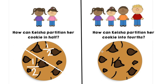Now Keisha received another cookie and she didn't only want to share it with one friend, but she wanted to share it with her three other friends. With all of them sharing the cookie, that makes four people. And Keisha knew that if she wanted to split her cookie into four equal parts, then she needed to cut it into fourths. How can Keisha partition her cookie in fourths? Remember that when we are partitioning a cookie in fourths, we need four equal parts.